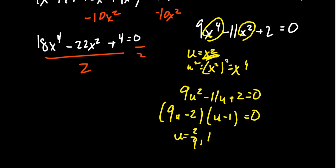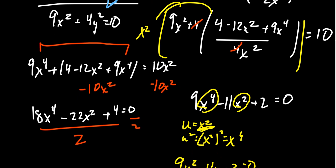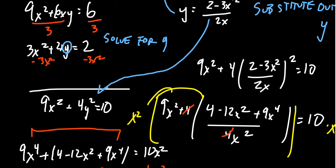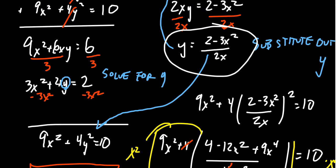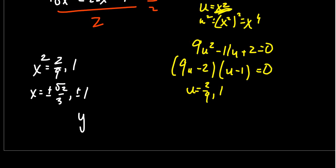But u is not what we want — we want to solve for x. So u equals x² gives us x² equals 2/9 and 1, meaning x equals ±√2/3 and ±1. These are four possible x coordinates. Now we come back to the equation for y: y equals (2 minus 3x²) over 2x. If we plug these four values of x in, there are four cases to consider.